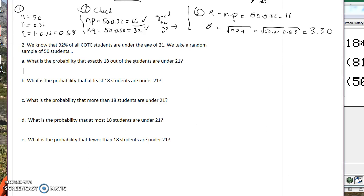So let's start with the first one, which says what is the probability that exactly 18 out of the 50 students are under the age of 21? So we're going to put 18 here. We want exactly. So with that continuity correction, we're going to go just below and just above. So we're going to use 17.5 and 18.5,